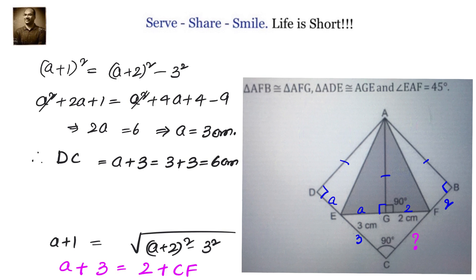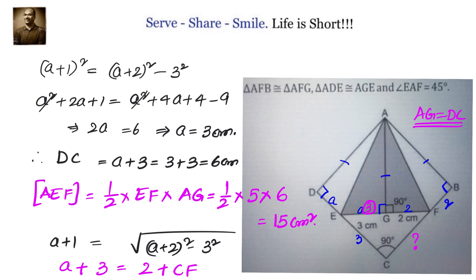Now, we know DC is 6 centimeters then we can easily calculate the area. Area of triangle AEF equals to half into base into height, half into EF into AG which is equals to half into EF is A plus 2, A is 3 we got this as 3. So 3 plus 2 is 5 multiply with AG, AG is equals to DC because we got AB, AD, AG all of them are equal by congruency. So that is equals to half into 5 into 6 which is equals to 15 CM square. So the area of the shaded region is equals to 15 CM square.